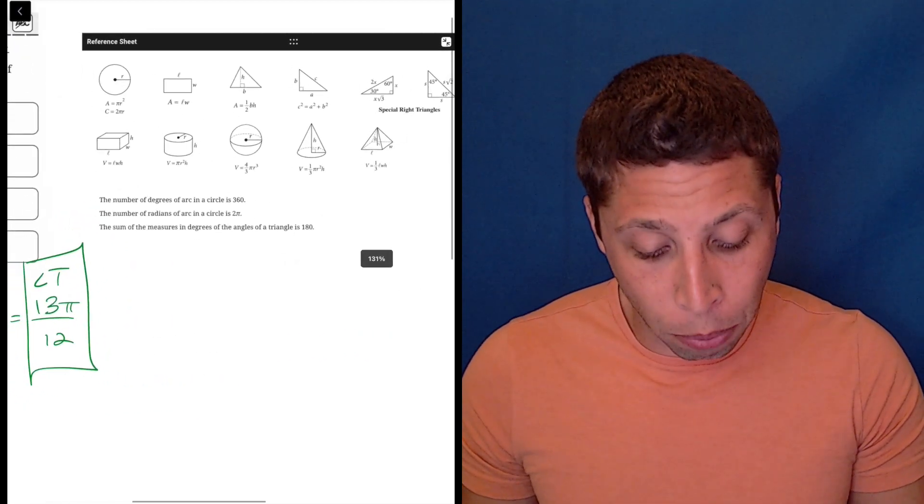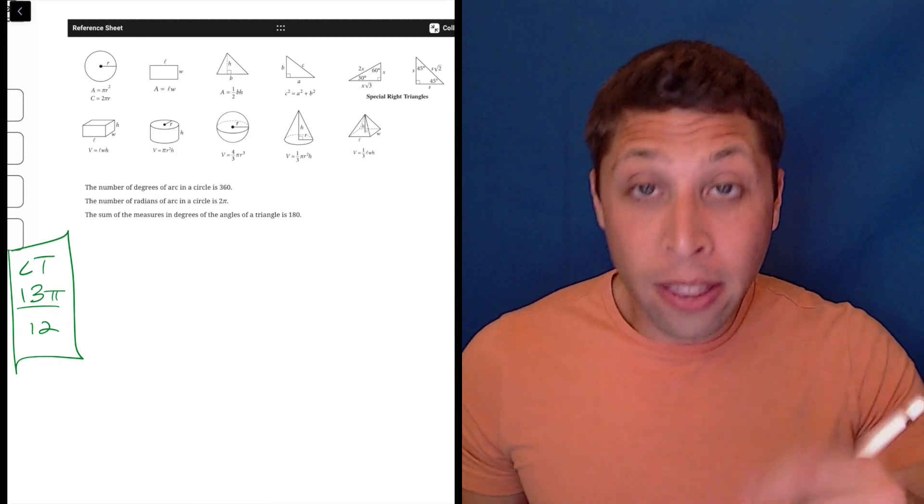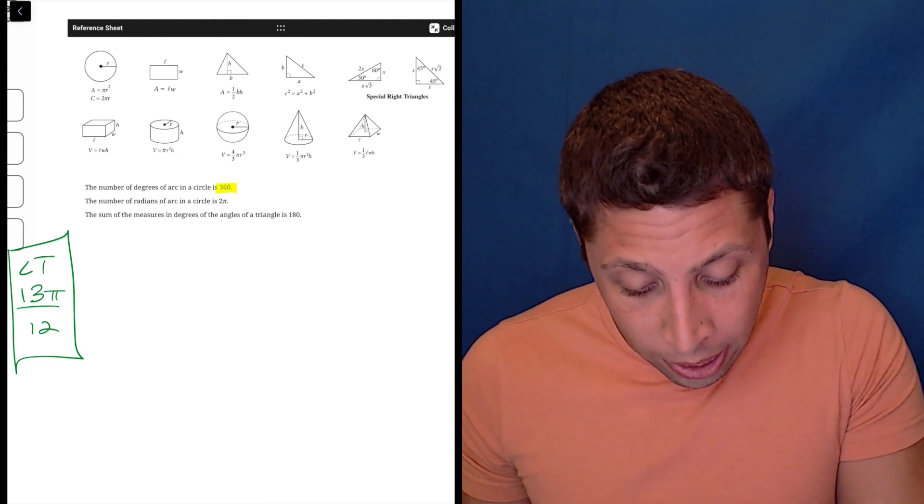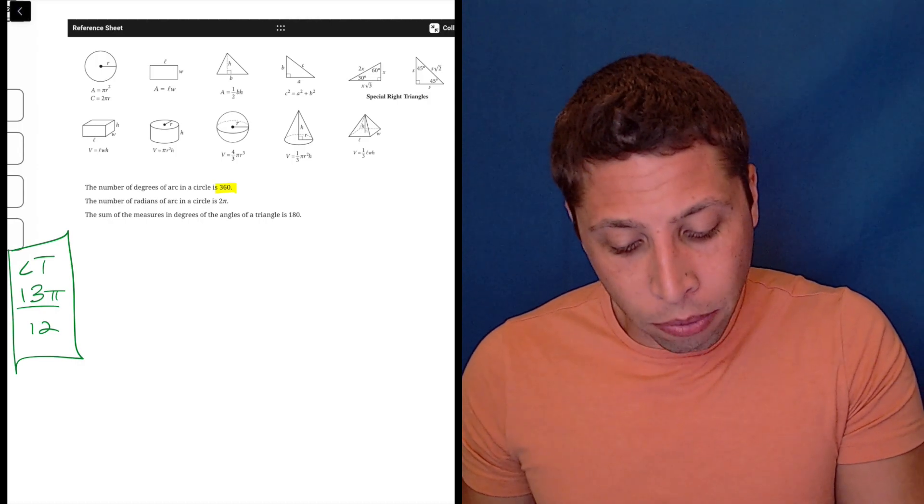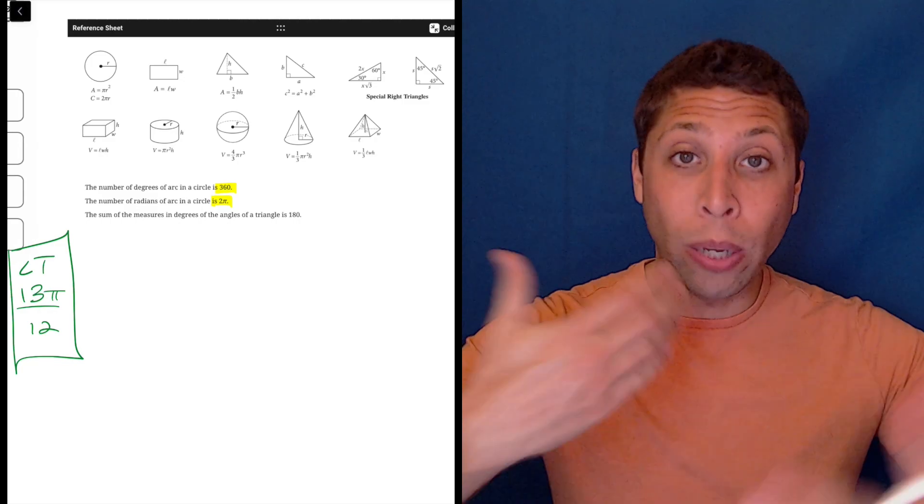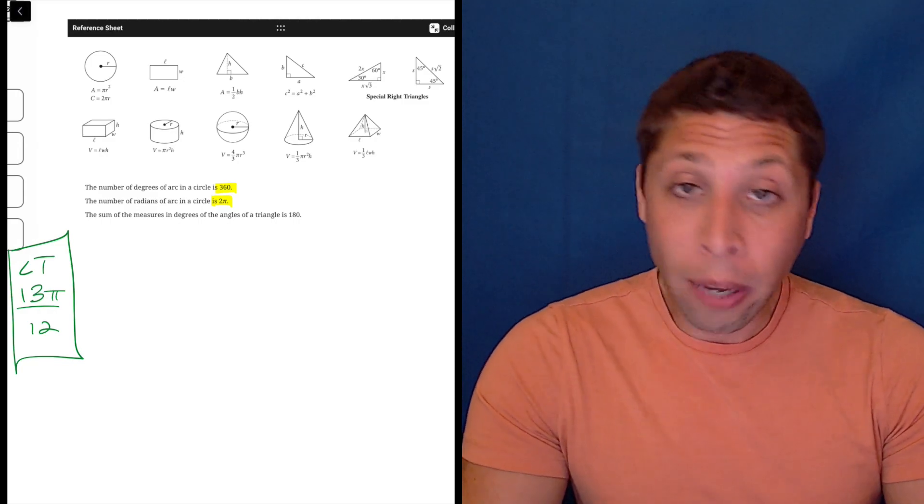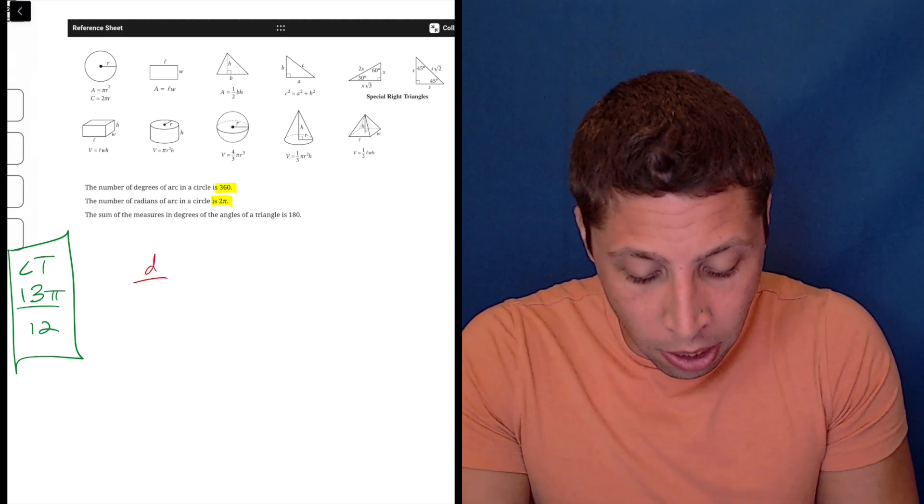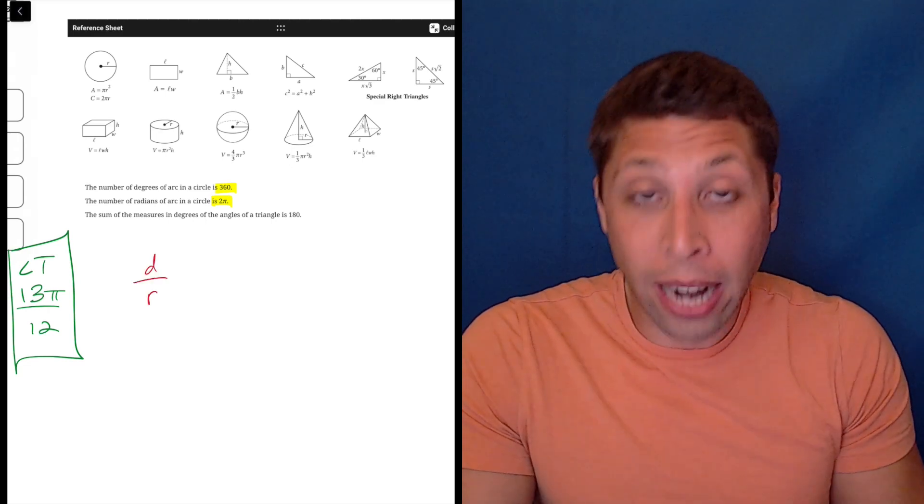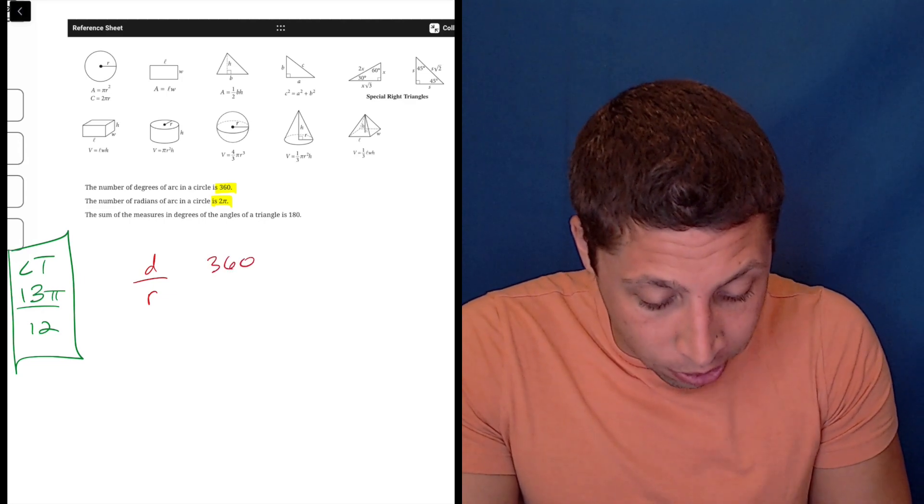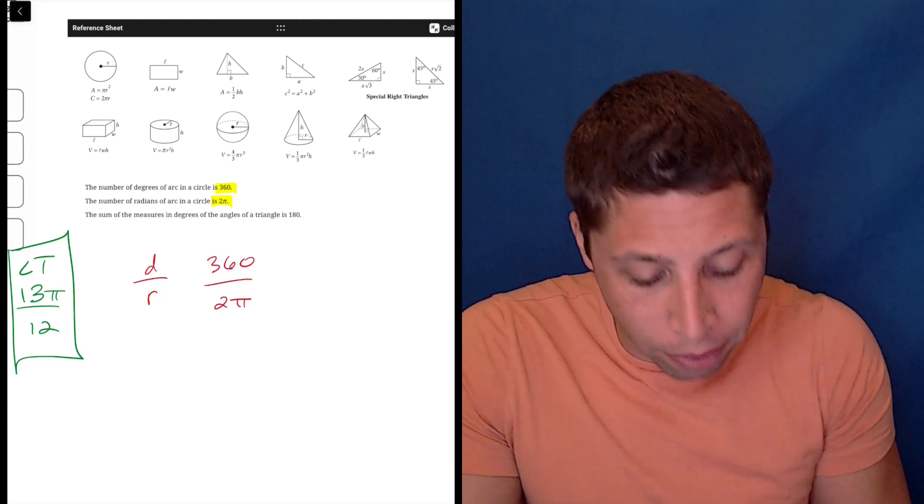So the thing that's foolproof is in the reference chart, they tell us that the number of degrees of arc in a circle is 360 and the number of radians of arc in a circle is 2π. So that's a conversion and that's kind of like a ratio that then we can use to our advantage. So what I would do here is I would put the number of degrees over the number of radians and I would create a proportion.